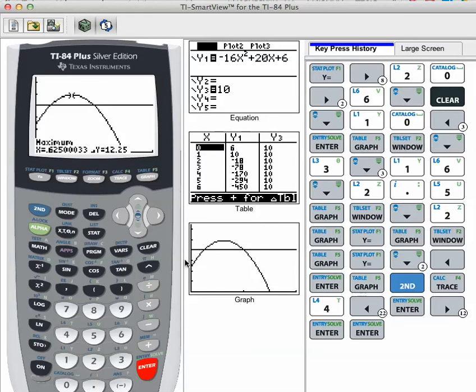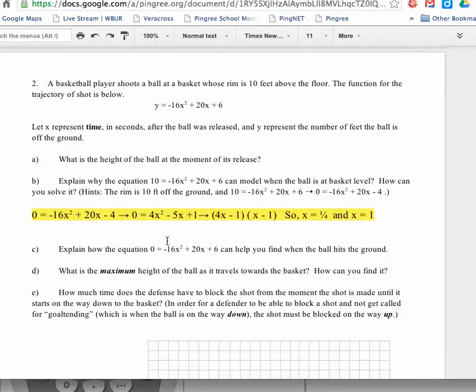So I think that's what the question is asking. What is the maximum height that the ball makes? 12 and one quarter feet. How do I find it? You can use, like I said, either the minus b over 2a to find the axis of symmetry. Plug that in and you'll get 12 and a quarter. Or you can do what I just did and trace.